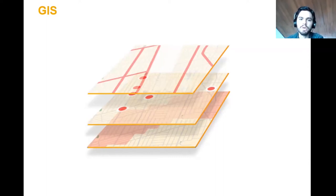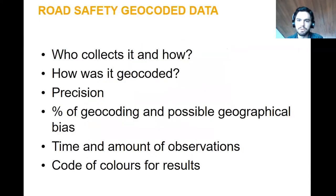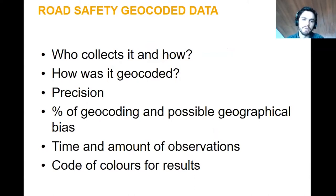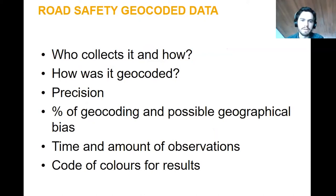You need to know who collects the data that you're using and how. It's very important in crash data because it will be very different if the data is collected by the police or by the health department. The position depends on what is collected, and it's very important to take that into account. How the data was geo-corrected is also important — it's not the same if a person in the field used GPS to collect coordinates versus if the person only included a reference or an address.